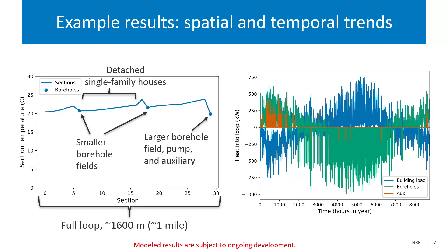As a quick example of outputs: on the left we're showing spatial trends — as you move around the loop, you see temperature changes, consistent with what was mentioned earlier. On the right, every hour throughout a year showing how heat is being exchanged with the loop: building loads and borehole loads in blue and green are generally opposite. In winter, buildings take heat out of the loop and the borehole field puts heat in; we see the opposite in summer. You can identify where auxiliary heat might be needed and consider trade-offs like an electric boiler versus drilling more boreholes.